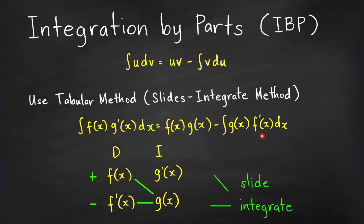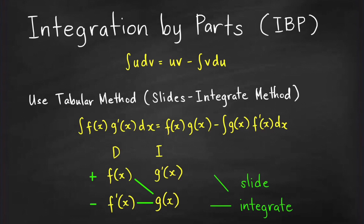We can write this formula in tabular form where a 'slide' is a diagonal arrow connecting a derivative entry to the next antiderivative entry, and a horizontal line means 'integrate.' The signs of the products alternate starting from positive. So we have f(x)·g₁(x) positive, then minus f′(x)·g₂(x), then plus f″(x)·g₃(x), and so on, with the last row being the integral term.